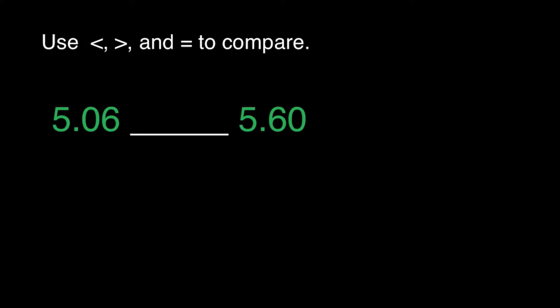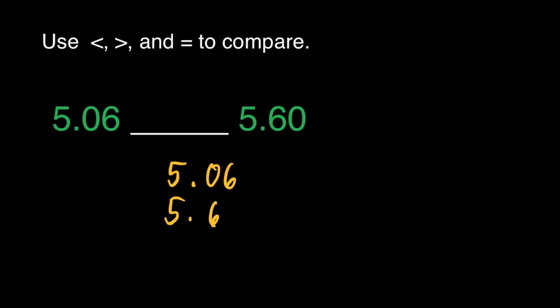We have here: 5 and 6 tenths ___ 5 and 60 hundredths. The first thing we should do is align the decimal points. So we have to rewrite these decimals — 5 and 6 tenths, and 5 and 60 hundredths. Starting from the left, let's identify the place where the digits differ.